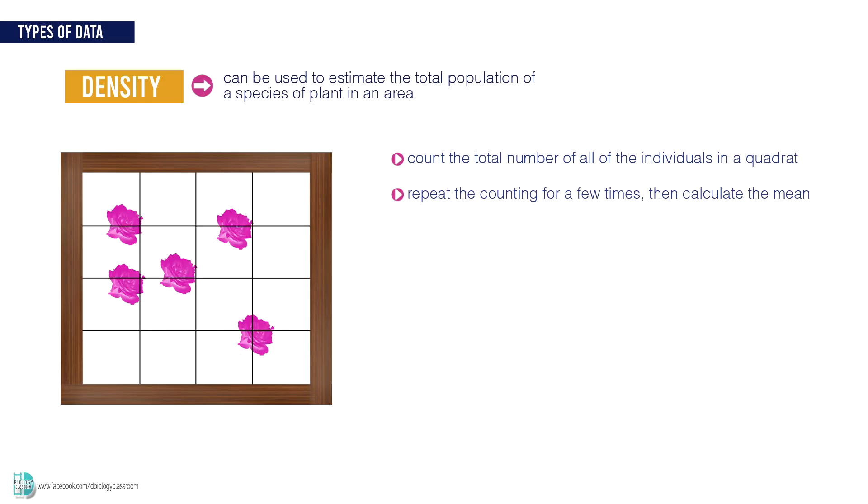Then calculate the mean. The density of the species is calculated by the number of individuals divided by the size of quadrat. Let's say the quadrat in my example is 1 meter square. Since there are 5 of them in the quadrat, the density is 5 per meter square.